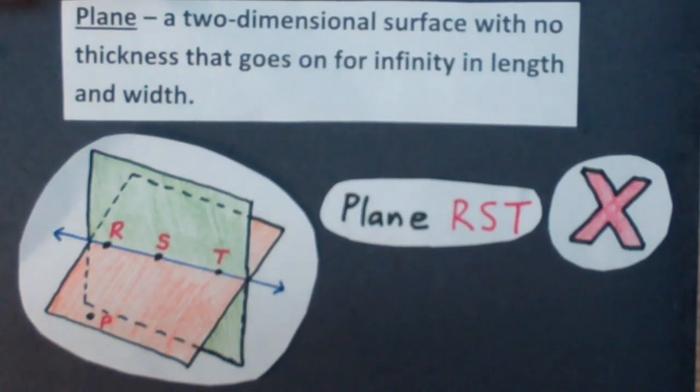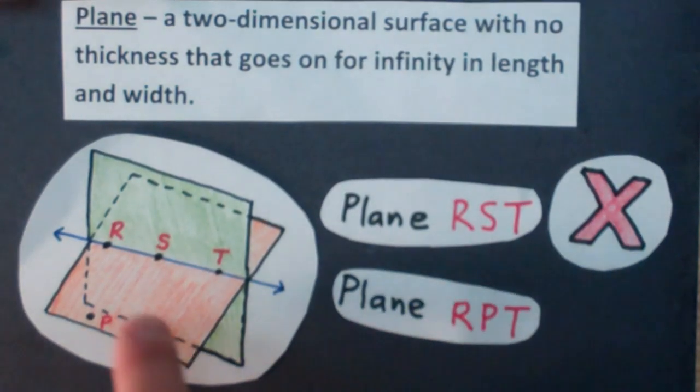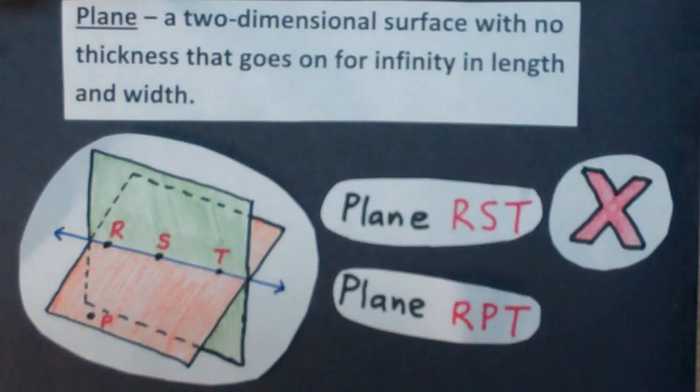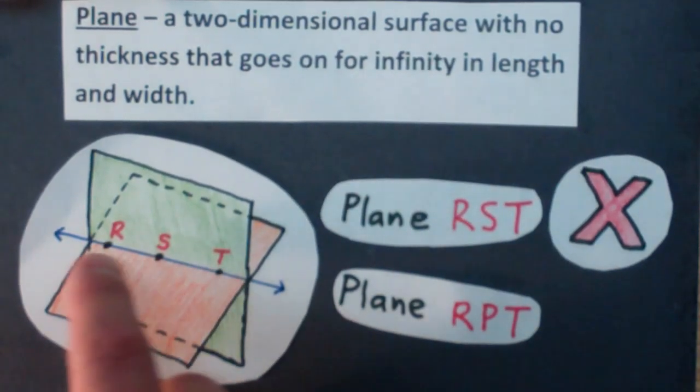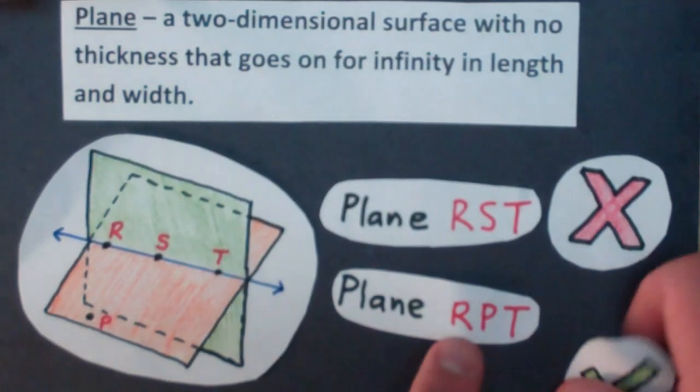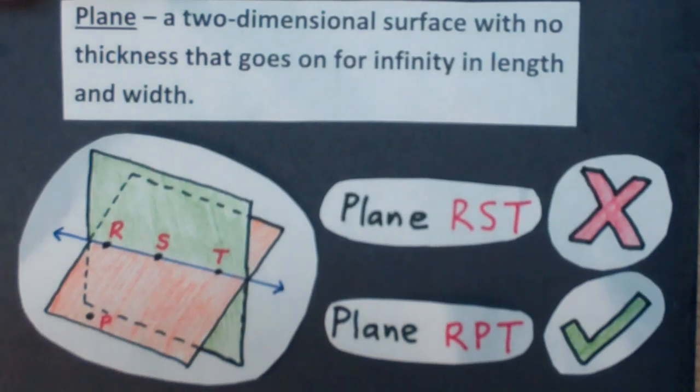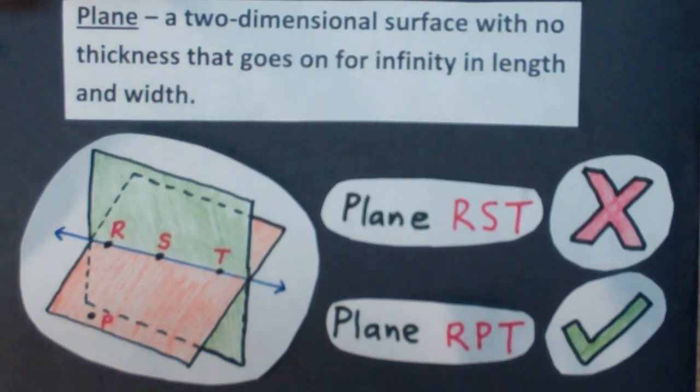So that's why I have another letter here, P. I'm going to name this orange plane R, P, T. And since R, P, and T are not in a straight line, that is a correct way of naming this plane. So that's something that's important to understand.